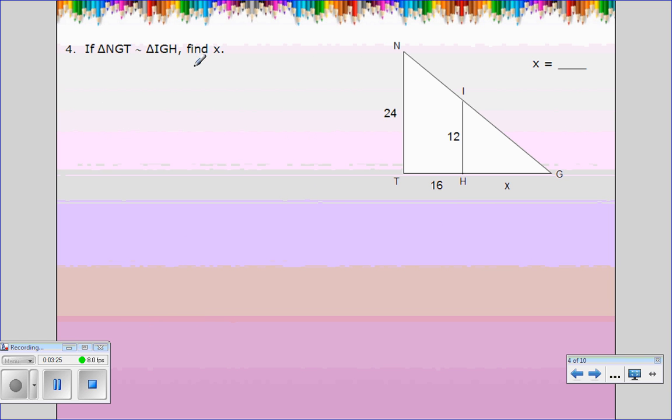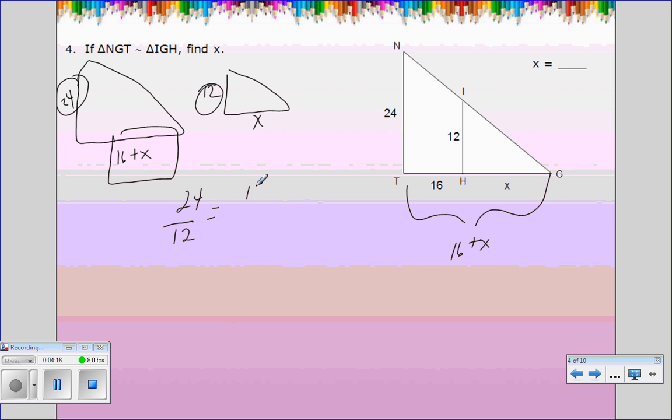All right. If the larger triangle NGT is congruent to the smaller triangle IGH, and again, what you want to do is draw them separately. So I'm going to redraw the larger triangle. So this side is 24. This side over here, the whole thing is 16 plus X. Now keep in mind, you want the whole side from corner to corner, so you want the whole thing, so that would be 16 plus X. And then you have your smaller triangle where this side is 12 and this side is X. So if we pair them together, the 24 is going to pair with the 12, so I've got 24 pairing with the 12. So that means the 16 plus X has to pair with the X.